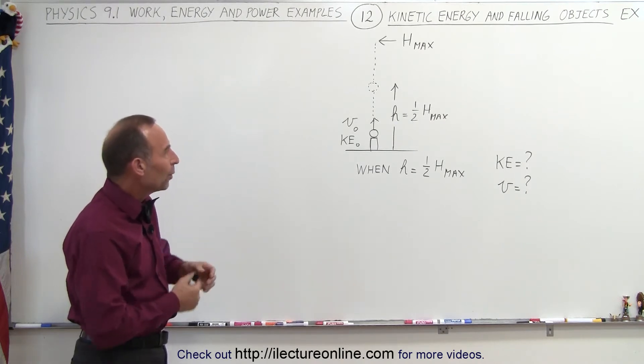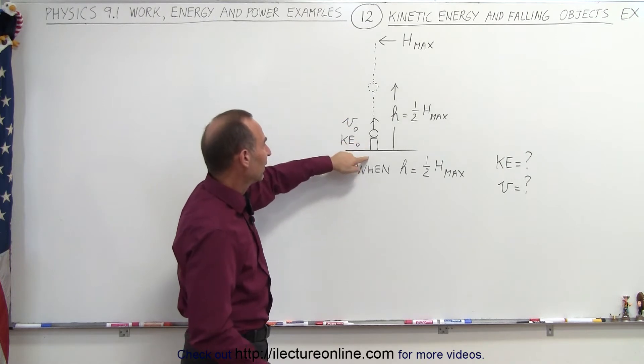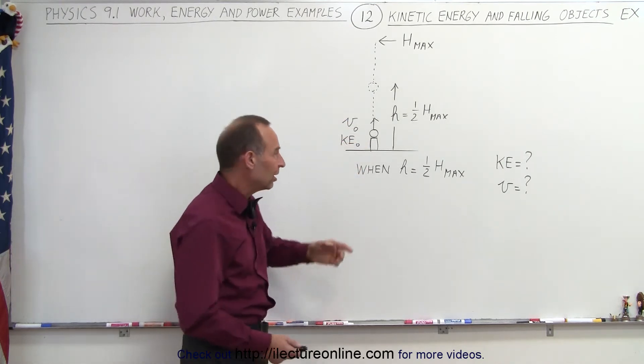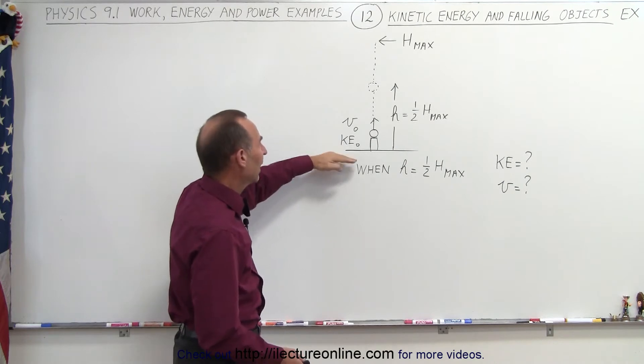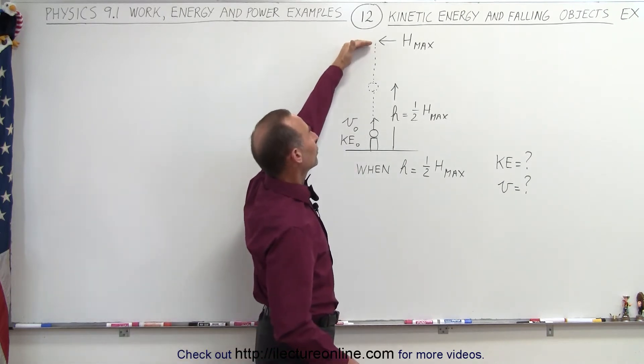So in this example, we have an object that's being shot upwards, directly upwards. It has the initial velocity V sub-naught and therefore initial kinetic energy, kinetic energy sub-naught. And when let go, it will reach a particular height called H-max.